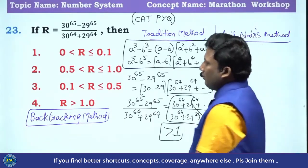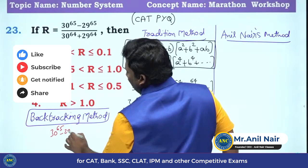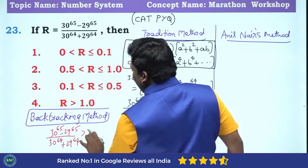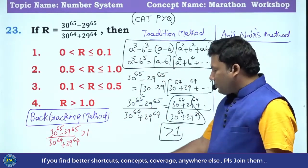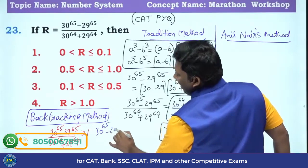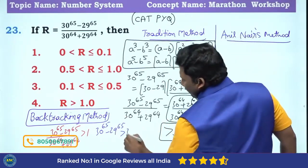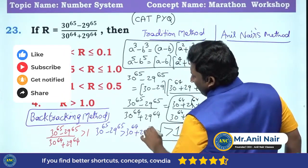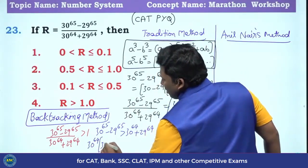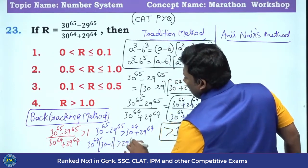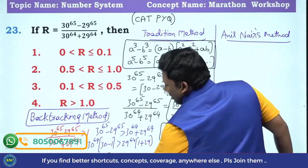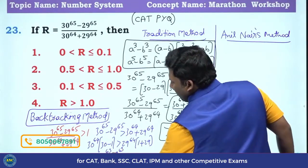Now the backtracking method. For the expression 30 power 65 minus 29 power 65 divided by 30 power 64 plus 29 power 64: if I assume the answer is greater than 1, I cross multiply, getting 30 power 65 minus 29 power 65 greater than 30 power 64 plus 29 power 64. Taking 30 power 64 to the left gives 30 power 64 into (30 minus 1), and taking 29 power 64 gives (1 + 29). So 1 plus 29 is 30, meaning 30 power 63 is greater than 29 power 63.